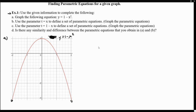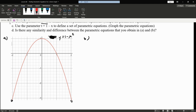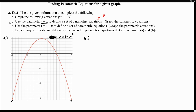Since we've been given the rectangular equation, we want to come up with our own parametric functions. Looking at part B, it says: use the parameter t equals x to define the set of parametric equations. For parametric equations, we need two sets — an equation for x of t and an equation for y of t, because this is how we define parametric equations: one equation for x and one equation for y.